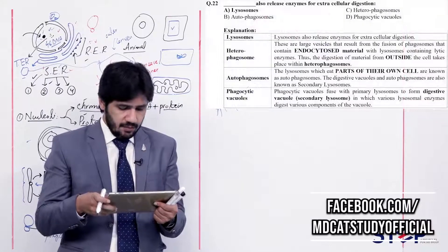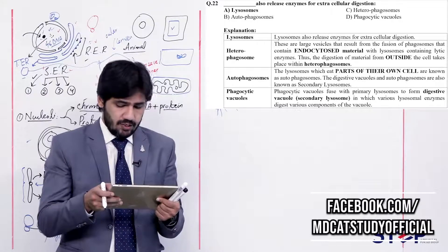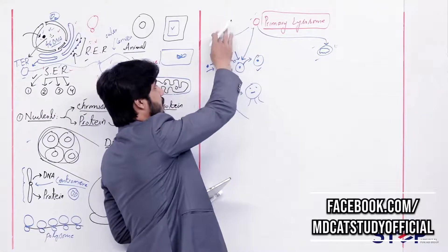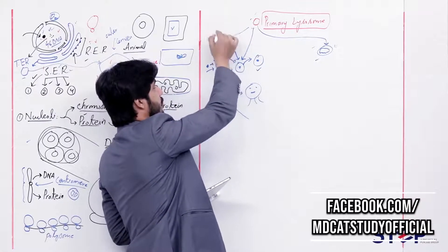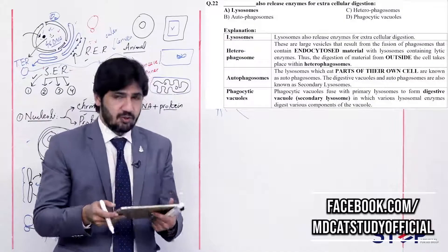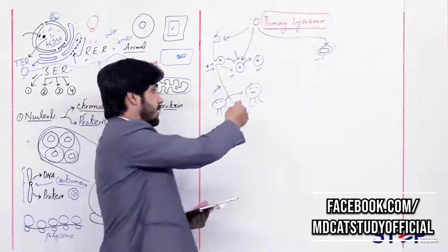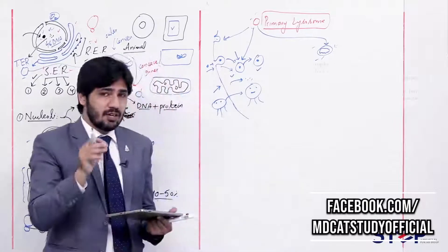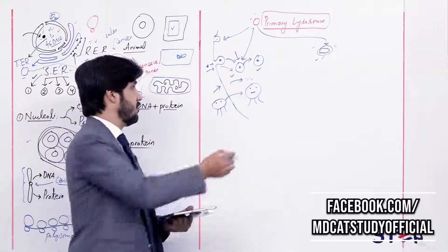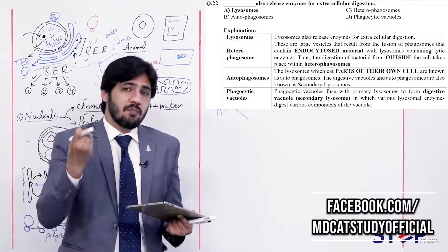Question 22: Blank also releases enzymes for extracellular digestion — (alpha) lysosome, (beta) autophagosome, (charlie) heterophagosome, (delta) phagocytic vacuoles. Among all the vesicles, the lysosome can fuse with the cell membrane and release its material outside the cell for extracellular digestion. Autophagosome digests the cell's own organelles. Heterophagosome digests foreign material taken in. Phagocytic vacuole is the material taken in through membrane invagination. So the right answer is alpha — lysosome.